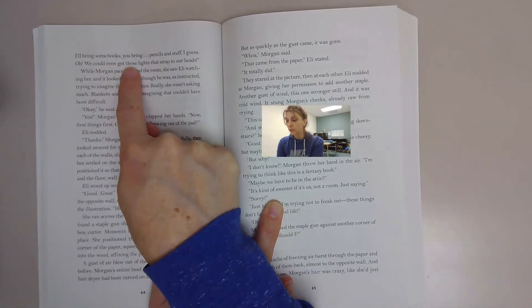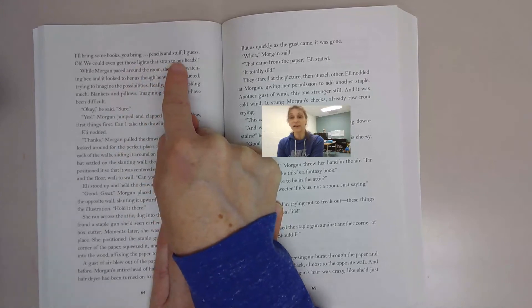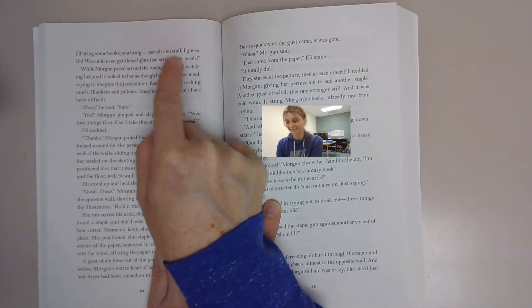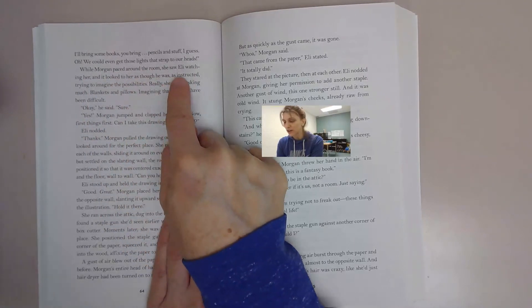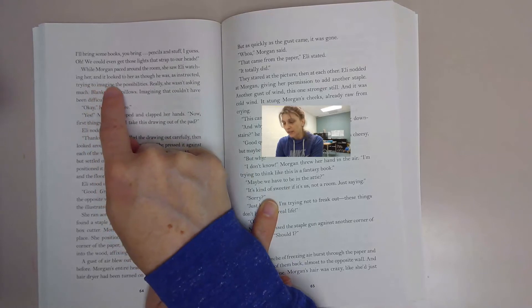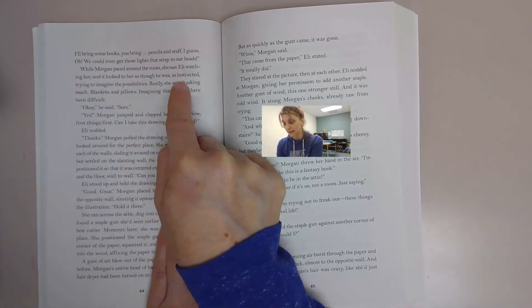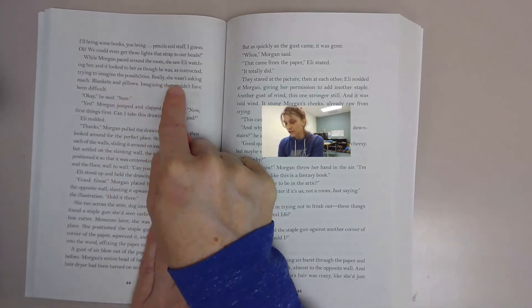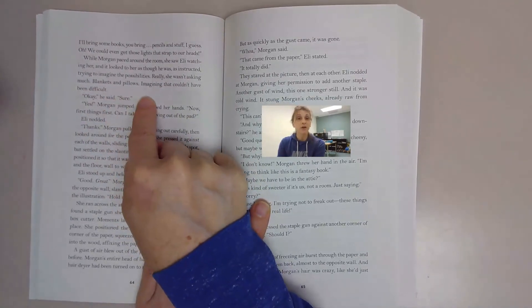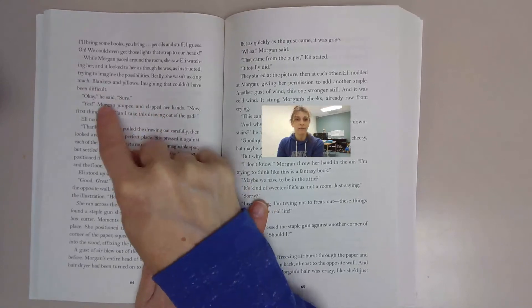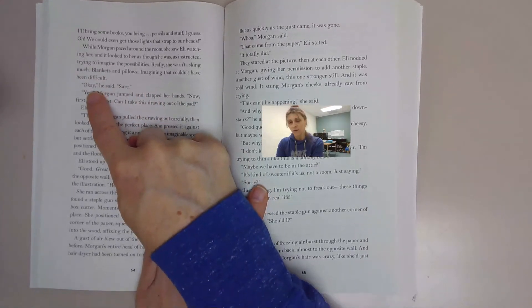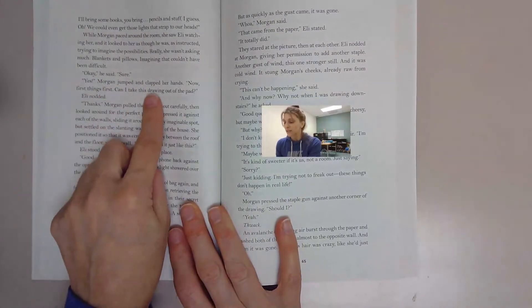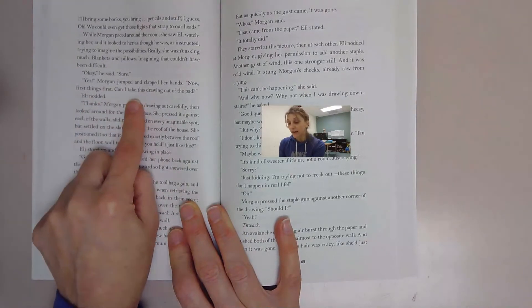Imagine the possibilities. For the first time all day she felt excited. We'll bring some comforters up here, pillows. I'll bring some books, you bring pencils and stuff I guess. Oh, we could get those lights that strap to our heads. While Morgan paced around the room she saw Eli watching her, and it looked to her as though he was, as instructed, trying to imagine the possibilities. Really she wasn't asking much. Blankets and pillows. Imagining that couldn't have been difficult. Okay, he said. Sure. Yes, Morgan jumped and clapped her hands.